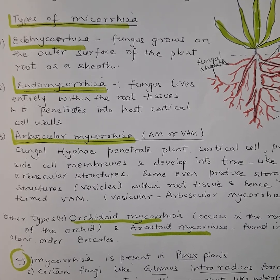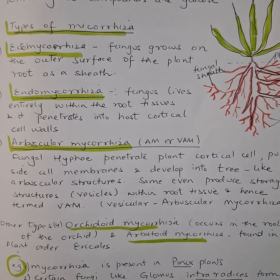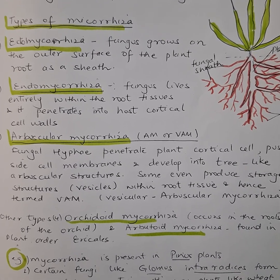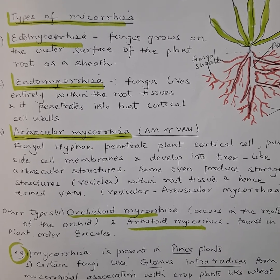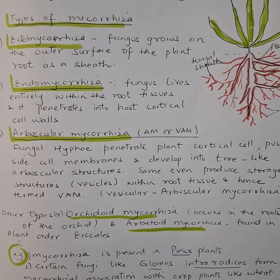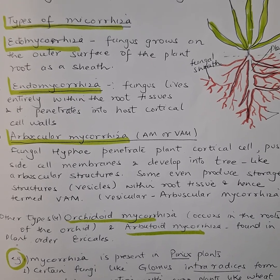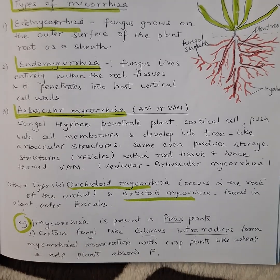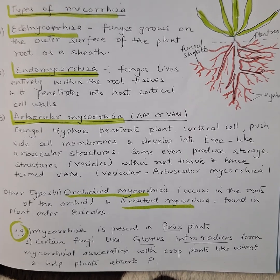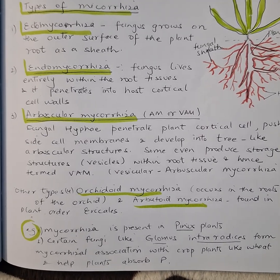Some other types include orchidoid mycorrhiza, which as the name indicates occurs in the roots of orchids. Arbutoid mycorrhiza is found in plants of the order Ericales.